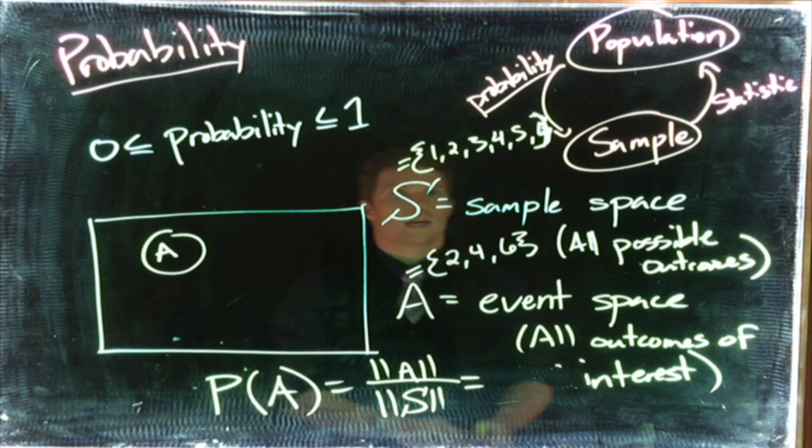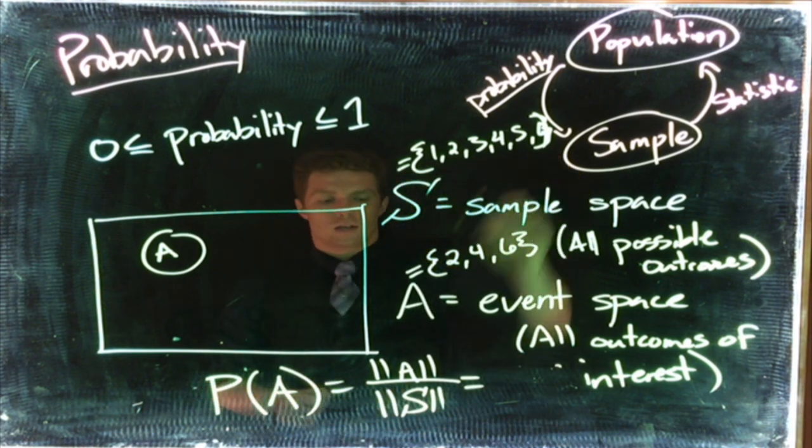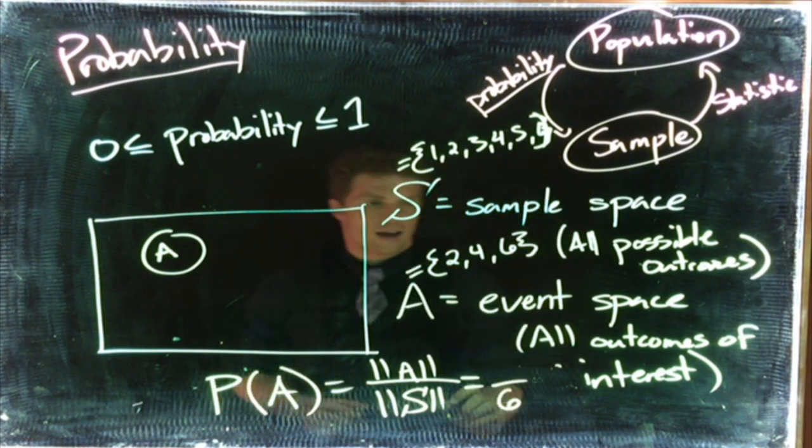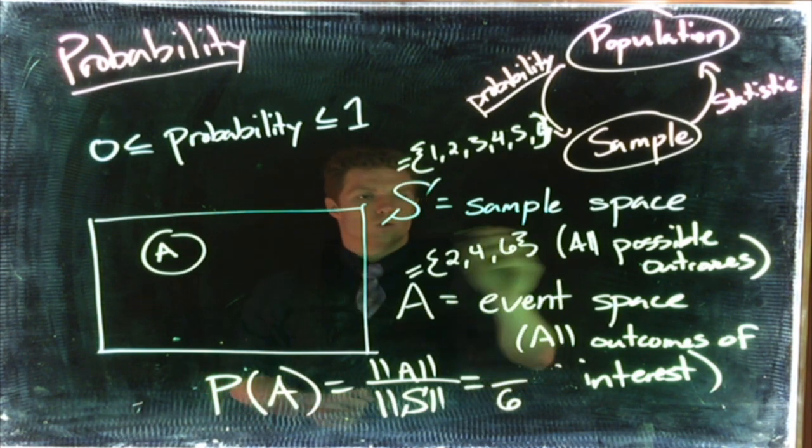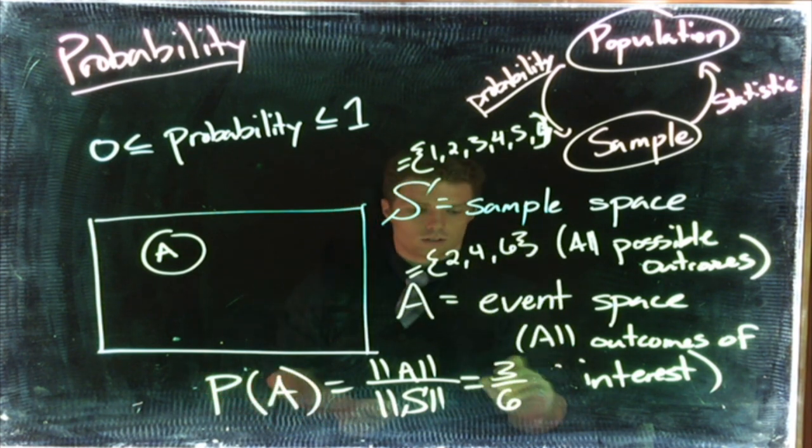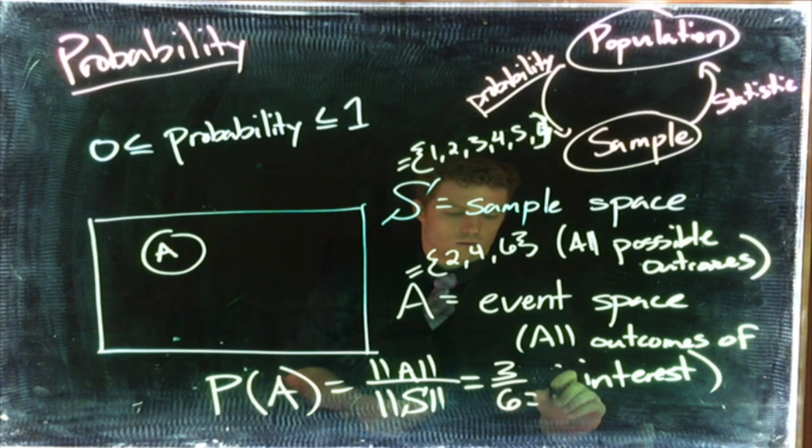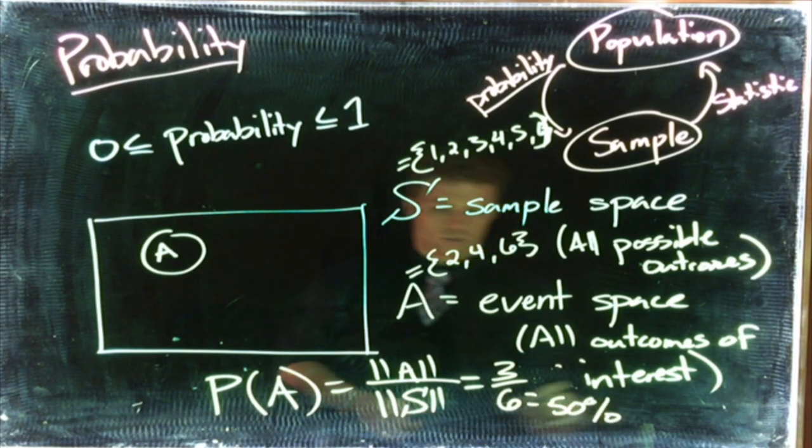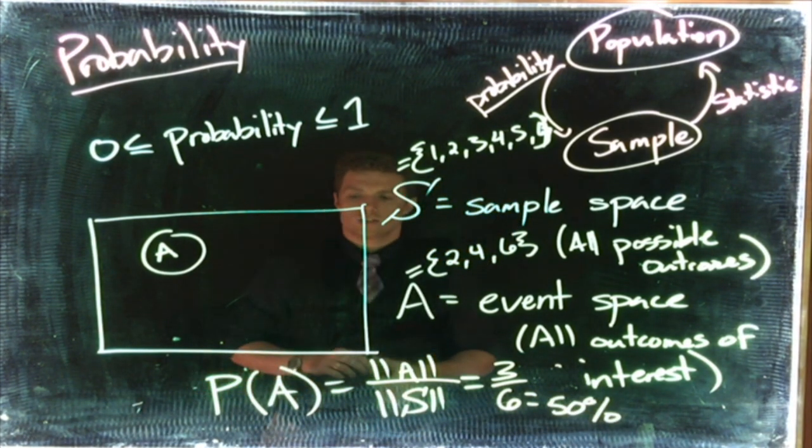We can count: total number of outcomes for rolling our dice is six, divided by the total number of outcomes in our event space, three—or that would be fifty percent. So in a nutshell, this is what our probability is.